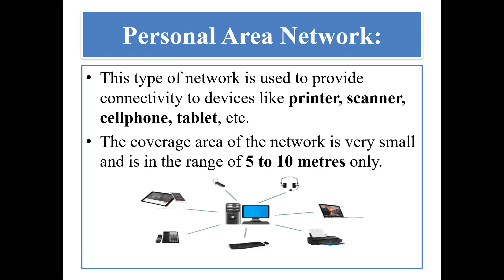The very first network is personal area network, also known as PAN. This type of network is used to provide connectivity to devices like printers, scanners, cell phones, tablets, and so on. The name suggests everything — it will only provide you personal space. Just like connecting your PC or two PCs to a printer is your personal space. The best example is connecting your father's or mother's mobile hotspot to your mobile via Wi-Fi, or connecting your headphone to your computer. The coverage area is very small, in the range of 5 to 10 meters only.